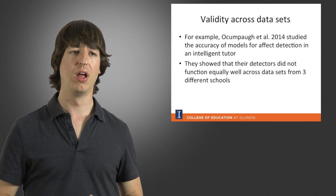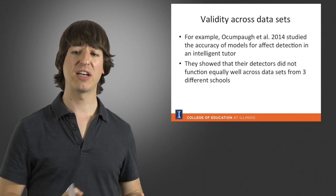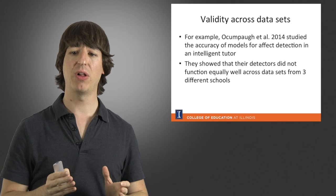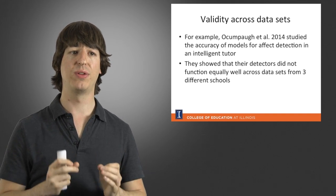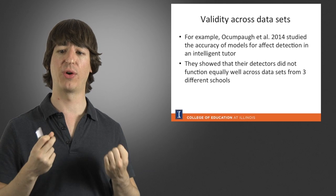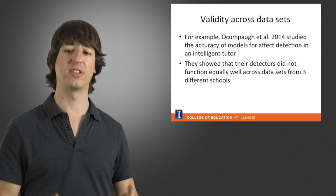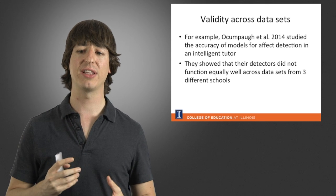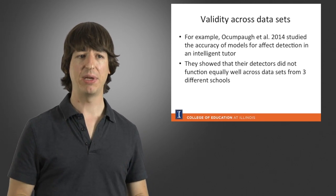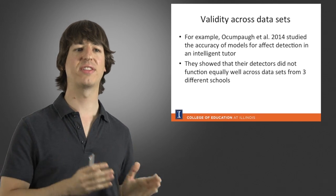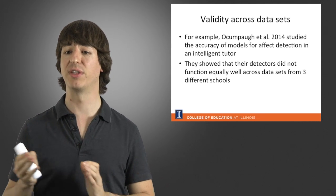For example, Ocampa and colleagues in 2014 studied the accuracy of models that they built to detect affect in an intelligent tutoring system. So for example, detecting whether a student is confused or bored or frustrated, and in this study what they realized is that the models that they built were not equally good across different datasets collected from three different schools.